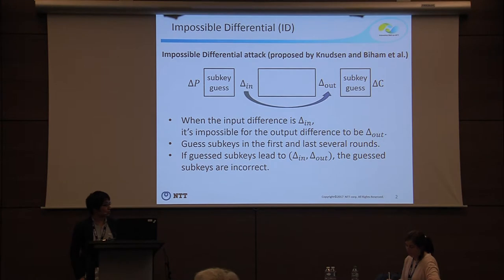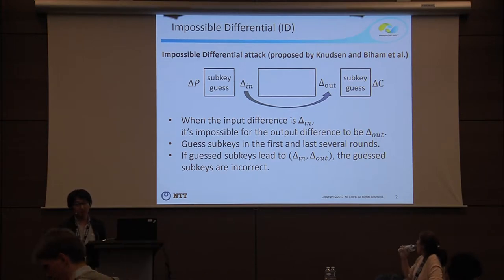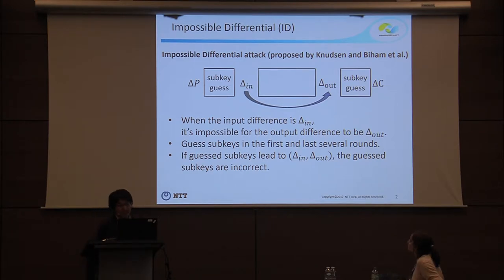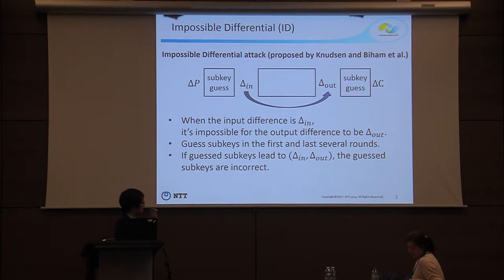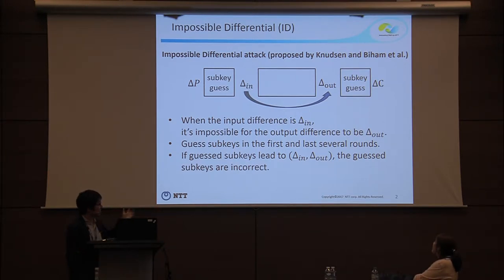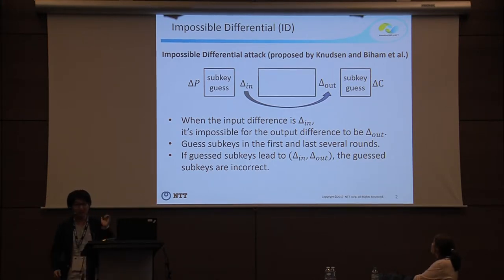First, I want to explain what is an impossible differential attack. This attack is one of the most powerful cryptanalytic techniques against block ciphers. This technique was first introduced by Knudsen and Biham et al. independently. The core idea: we first decompose the entire block cipher into three sub-block ciphers, and we focus on the middle sub-block cipher and assume the input difference is delta-in. If it never happens that the output difference becomes delta-out, we call the pair delta-in, delta-out an impossible differential.